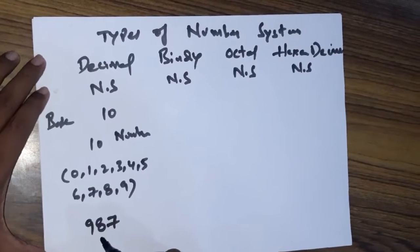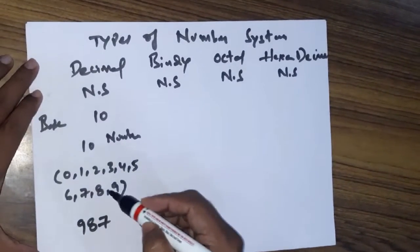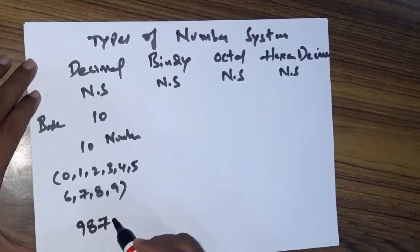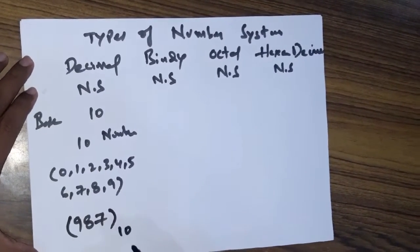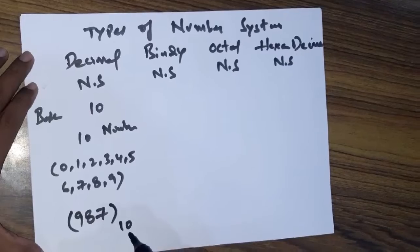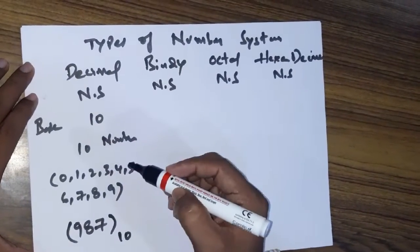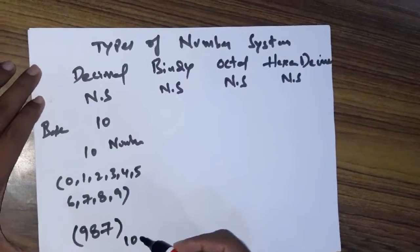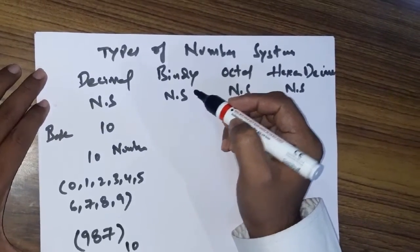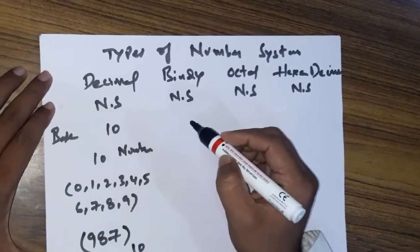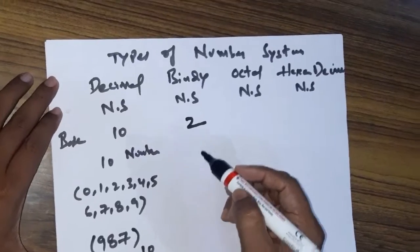In the decimal number system, we represent numbers by repeating these digits only. For example, writing 987 — we are repeating these numbers. We write the base 10 subscript to identify it as a decimal number. Next is the binary number system, where the base is 2.